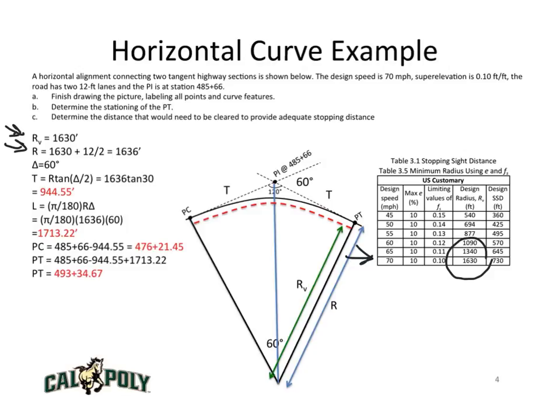We're told that delta is 60, so we can calculate the length of the tangent, which is just R times the tangent of delta over 2, or 1,636 times the tangent of 30 degrees.